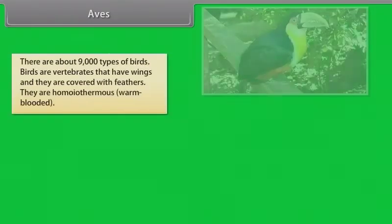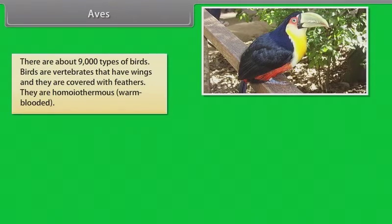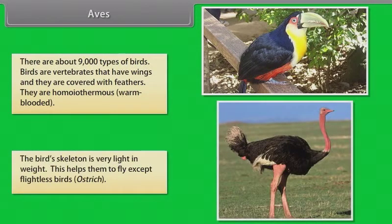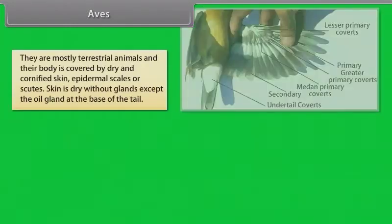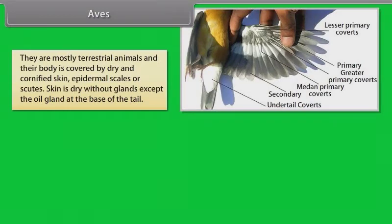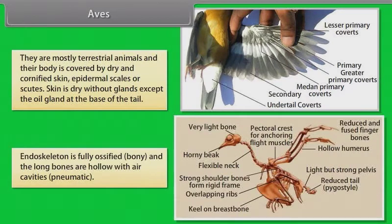Aves. There are about 9,000 types of birds. Birds are vertebrates that have wings and they are covered with feathers. They are homeothermous or warm-blooded. The bird's skeleton is very light in weight, which helps them to fly, except flightless birds such as Ostrich. Skin is dry without glands except the oil gland at the base of the tail. Endoskeleton is fully ossified — that is bony — and the long bones are hollow with air cavities (pneumatic).